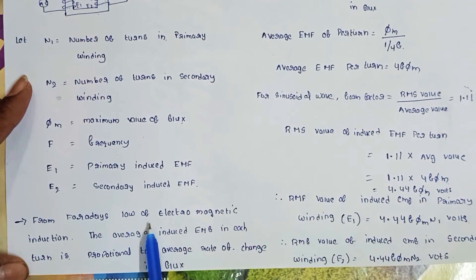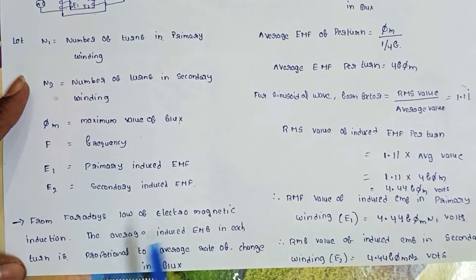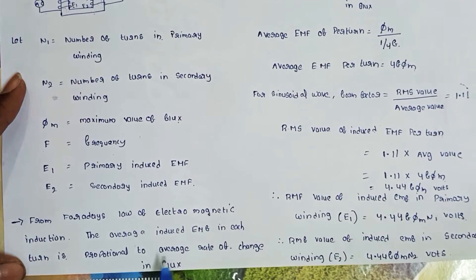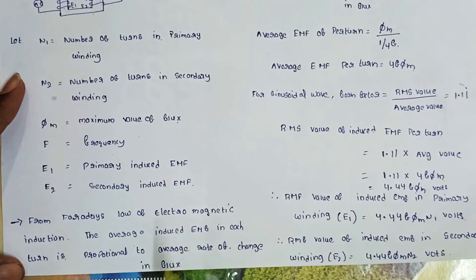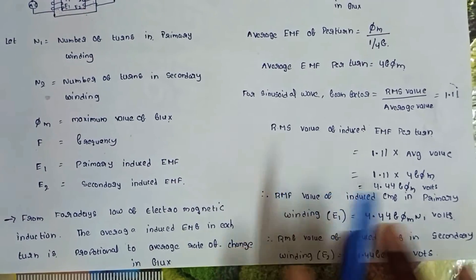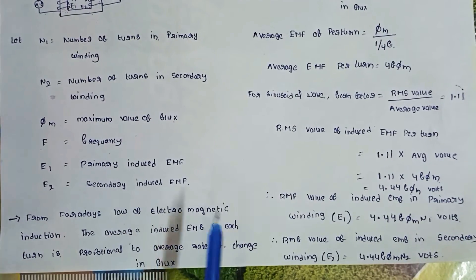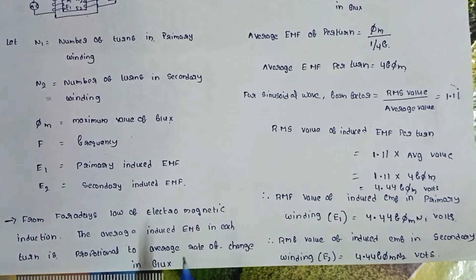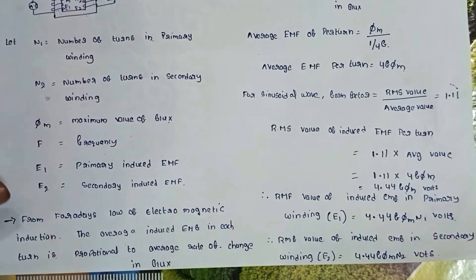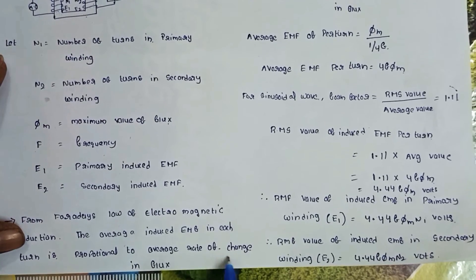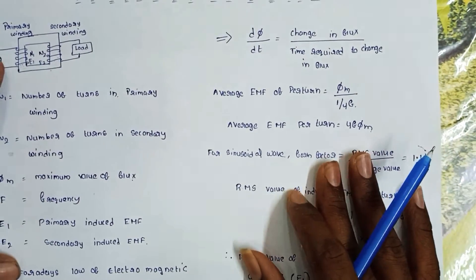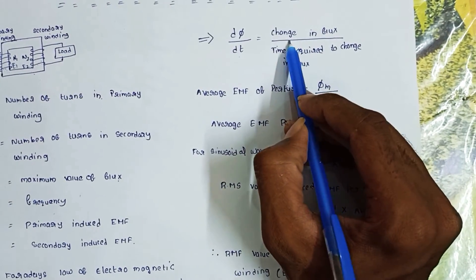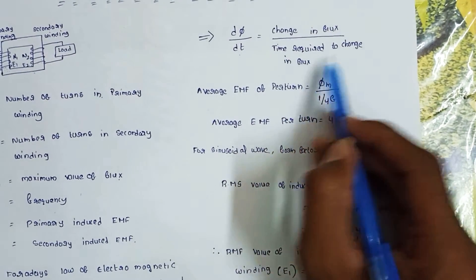From Faraday's law of electromagnetic induction, the average induced EMF in each turn is proportional to the average rate of change in flux. So here we can see dφ/dt equals the change in flux divided by the time required for that change in flux.